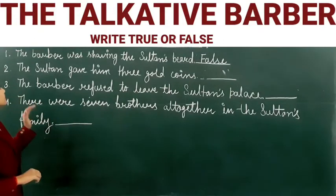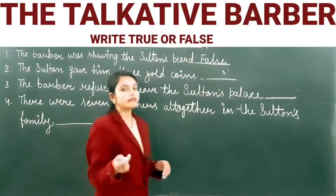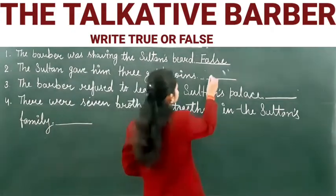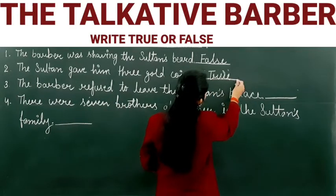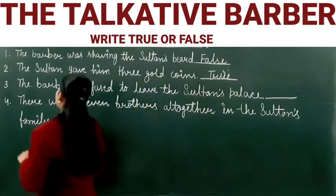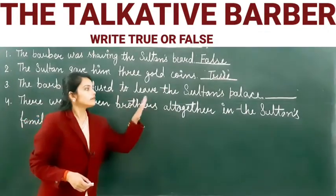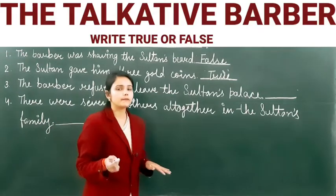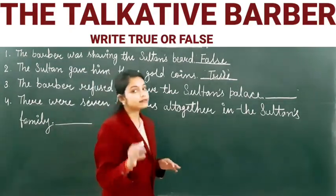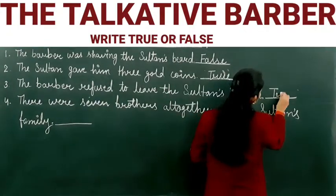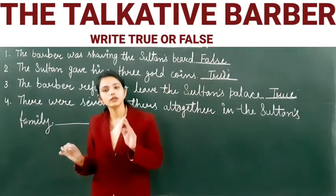Next: The Sultan gave him three gold coins. Yes, that is true — the Sultan gave three gold coins to the barber. Next: The barber refused to leave the Sultan's palace. Yes, that is true — he refused to leave the Sultan's palace.